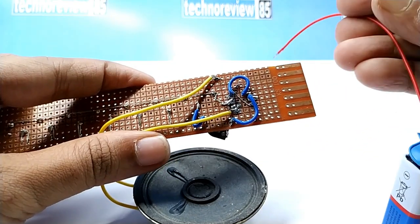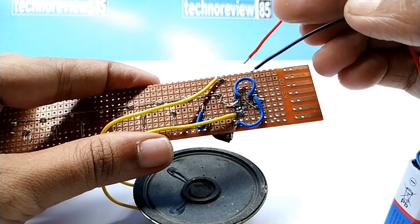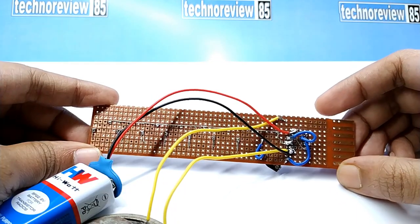Connect battery positive to IC pin 4 and battery negative to IC pin 1.